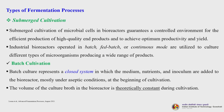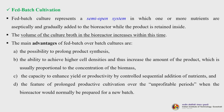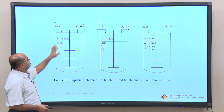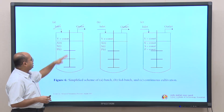In submerged cultivation, microbial cells are cultured in bioreactors that guarantee a controlled environment for efficient production of high-quality products. Industrial bioreactors operate in batch, fed-batch, and continuous mode. Batch culture is a closed system in which medium, nutrients, and inoculum are added at the beginning of cultivation and the volume remains theoretically constant. Fed-batch culture is a semi-open system. In the schematic: batch has no inlet or outlet; fed-batch has feed addition but no outlet and increasing volume; continuous has continuous feed supply and product withdrawal at constant volume.